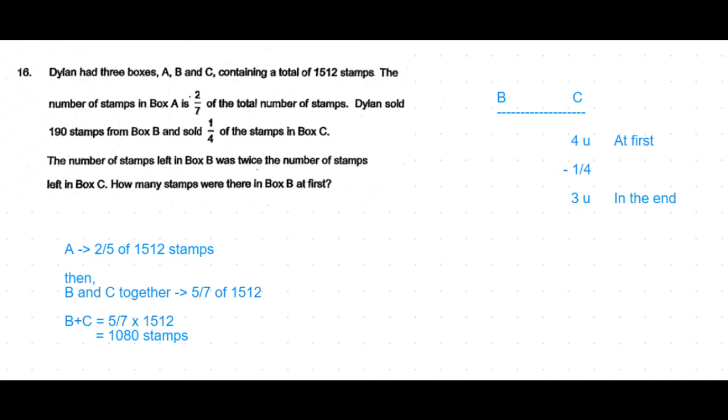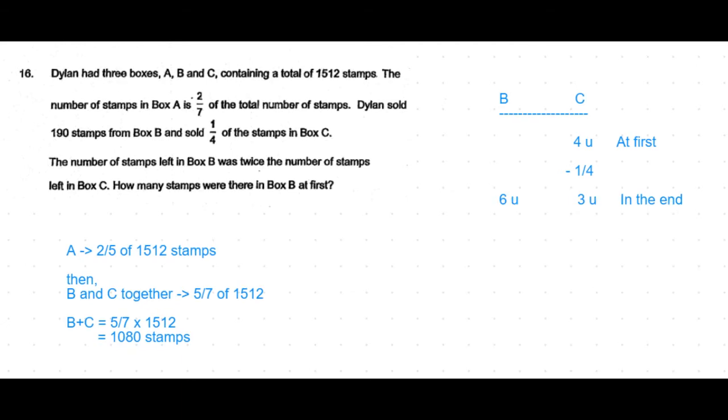But from the question, we know that B at the end is twice as much as C, which means at the end B should be 6 units. So B at first should be 6 units plus an additional 190 stamps.